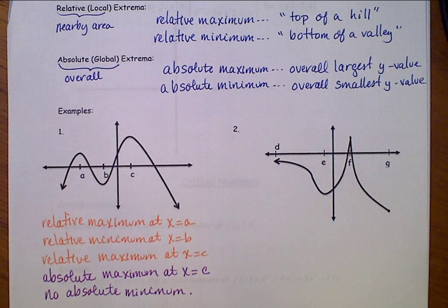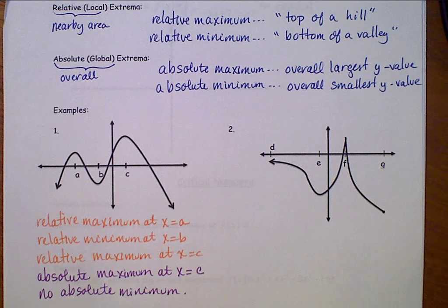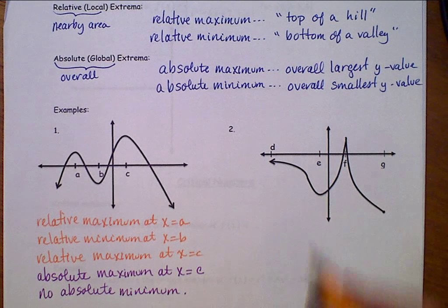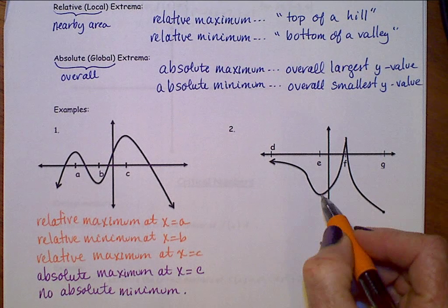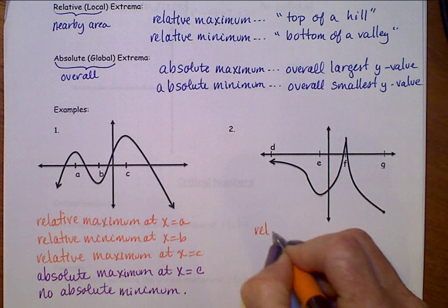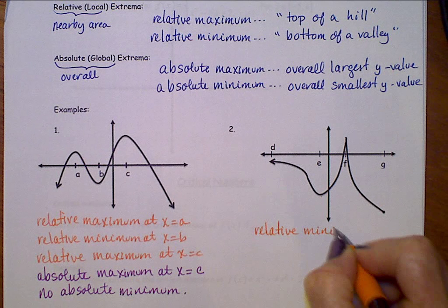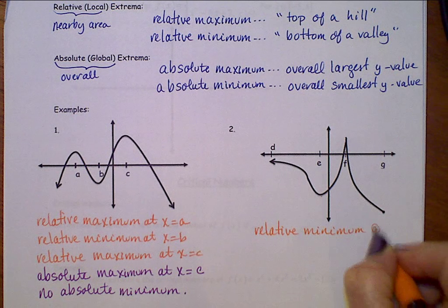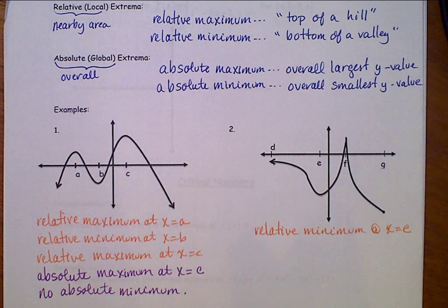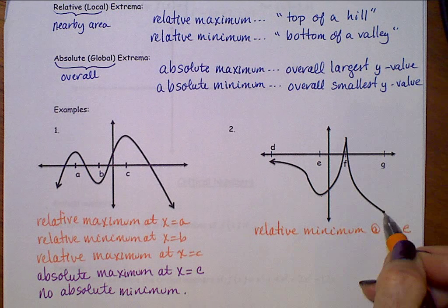Taking a look at this graph, if we look for our relatives first, we will see a relative minimum here at e. There is also a relative minimum out here at g.